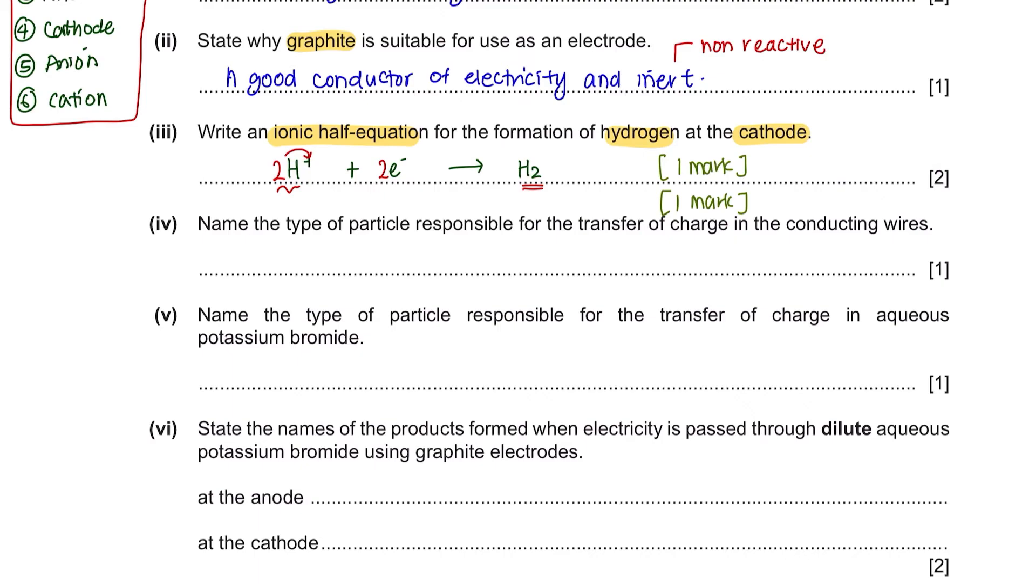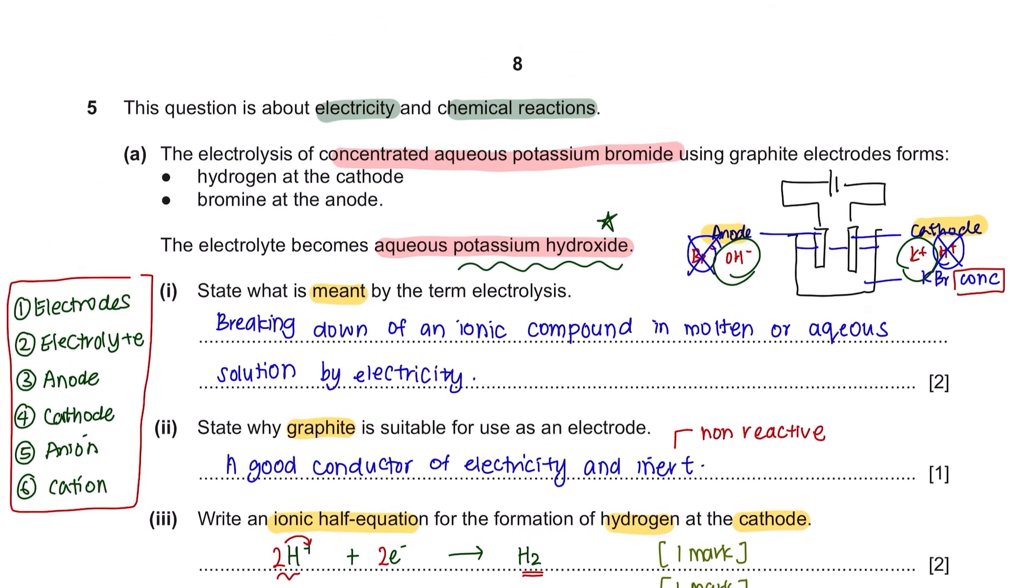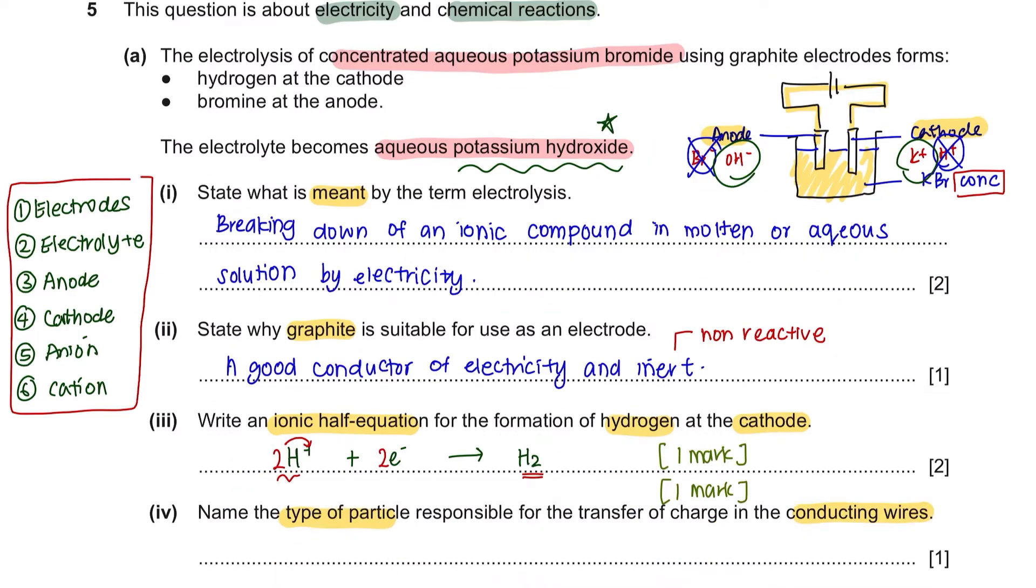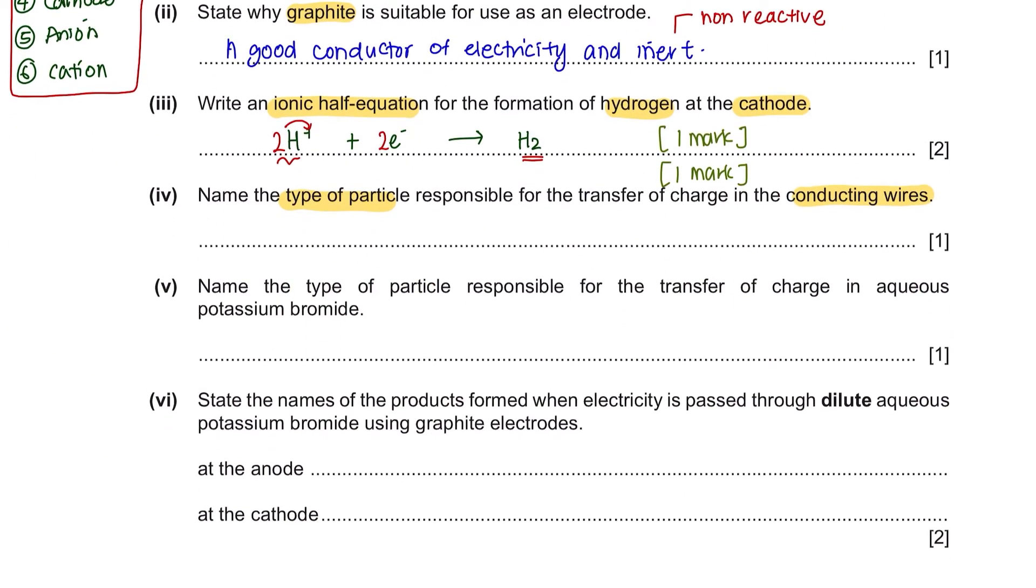Part 4. Name the type of particles responsible for the transfer of charge in the conducting wires. In the conducting wires, electrons would flow, and in the electrolyte, you would have ions. So the type of particles responsible in the wires would be electrons.